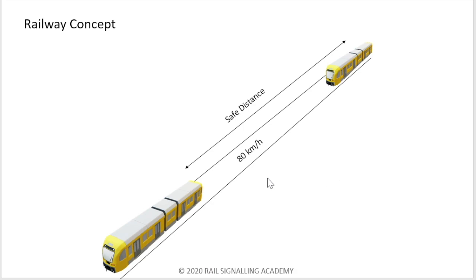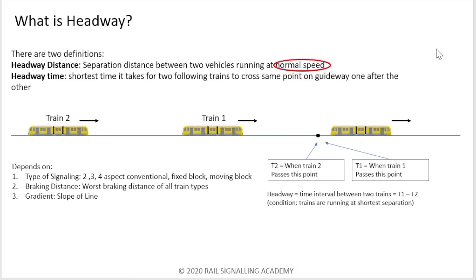I've spoken a lot about headway. What does it actually mean? What's its definition? There are two definitions of headway. Every time we talk about headway, it will always be either headway distance, which is somewhat the safe distance that we were talking about before, and there's headway time. In railways, usually headway time is the more used definition. Whenever people talk about headway, they're usually talking about the headway time - they'll mention it in seconds or minutes. The headway distance is separation distance between two vehicles running at normal speed. Headway time is the shortest time it takes for two following trains to cross same point on the guideway, one after the other.